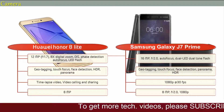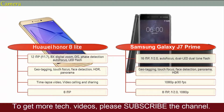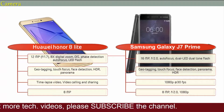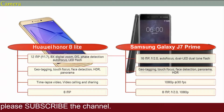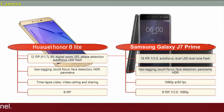Moving on to the primary camera of the Nokia 6, it is equipped with a 16-megapixel camera with f/2.0 aperture, autofocus and dual-tone dual LED flash. It shoots video at 1080p at 30 frames per second. You can also find an 8-megapixel secondary camera with f/2.0 aperture capable of 1080p video recording.